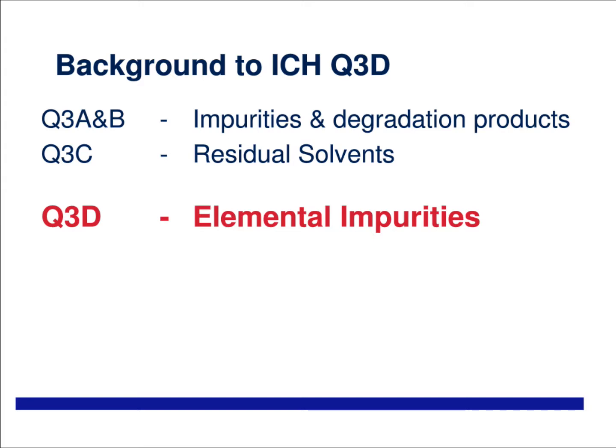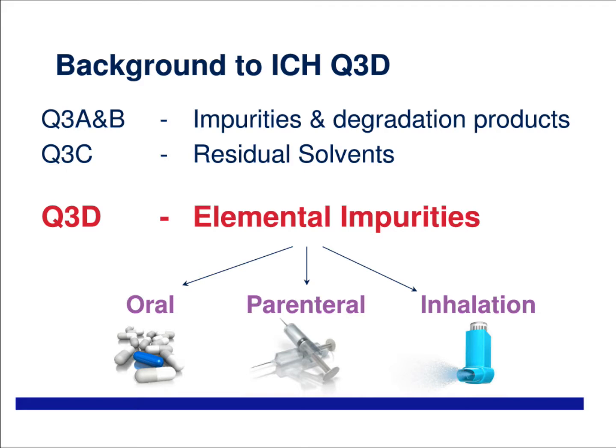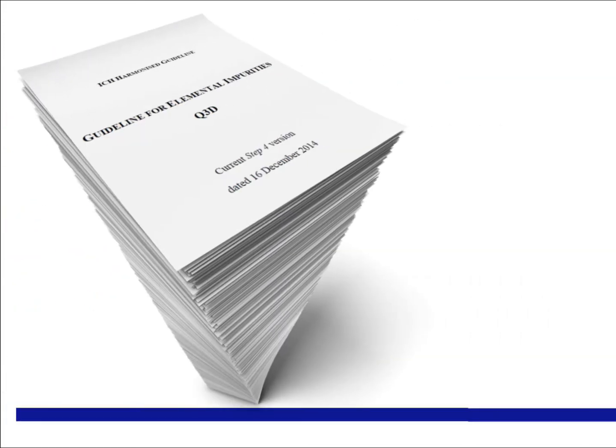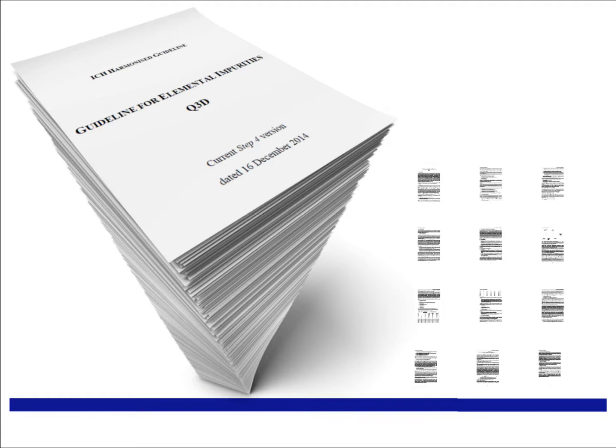The guideline currently considers limits for three routes of administration: oral, parenteral, and inhalation. The scope is clearly defined and it is stated that it is not applicable to a number of products including herbal, radiopharmaceutical, vaccine, and blood derivatives. Importantly, it's also not applicable to products in clinical research stages of development. The document itself is 73 pages long; however, the guideline part is just 12 pages long, with the remaining pages being explanatory appendices, and the document is relatively clear to follow.